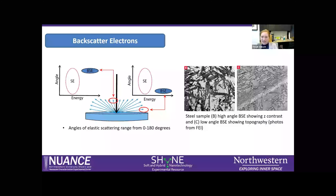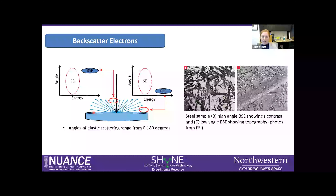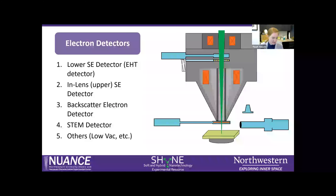Backscattered electrons can exit with different energies, but the angle at which they exit tells you different things. High-angle backscatter signal along the optic axis gives nice compositional contrast, whereas lower-angle backscatter signal can give topographic information. Some backscattered electron detectors can be set up to filter different types of backscatter signal. With that, I'm going to pass it over to Nick to talk about the different types of electron detectors we have at Nuance.